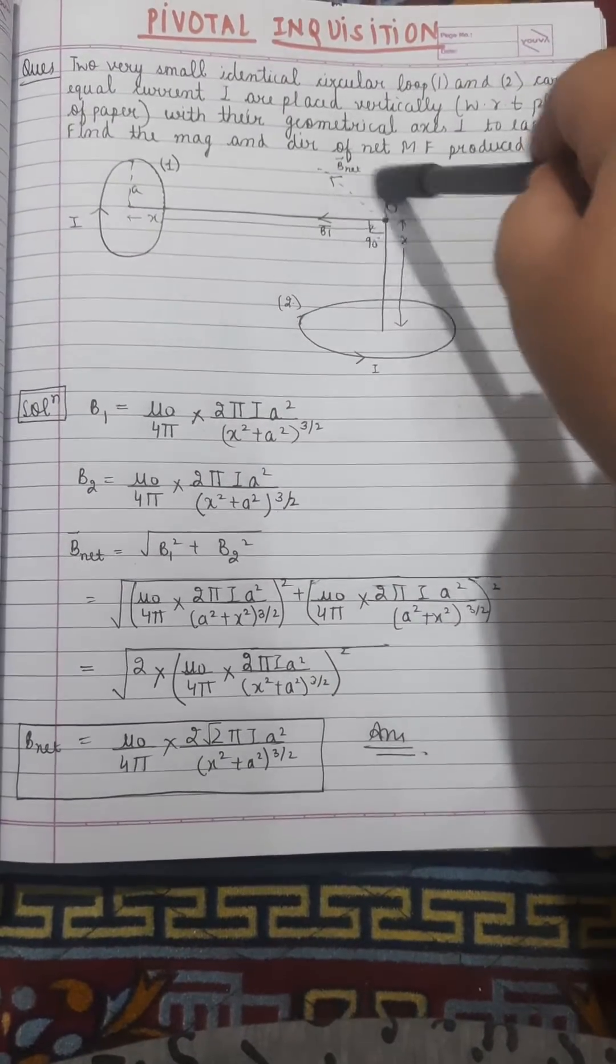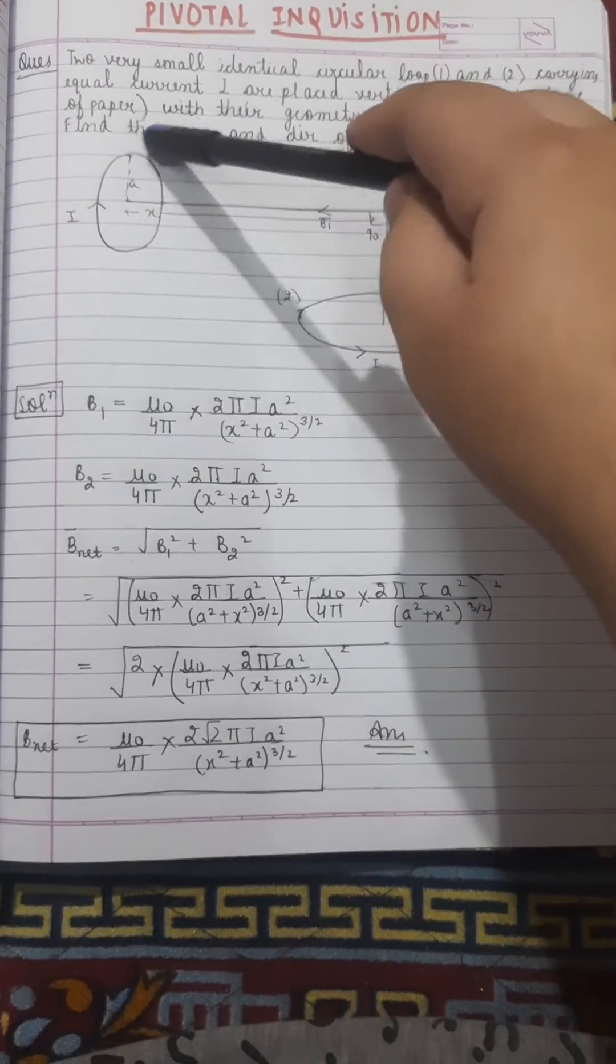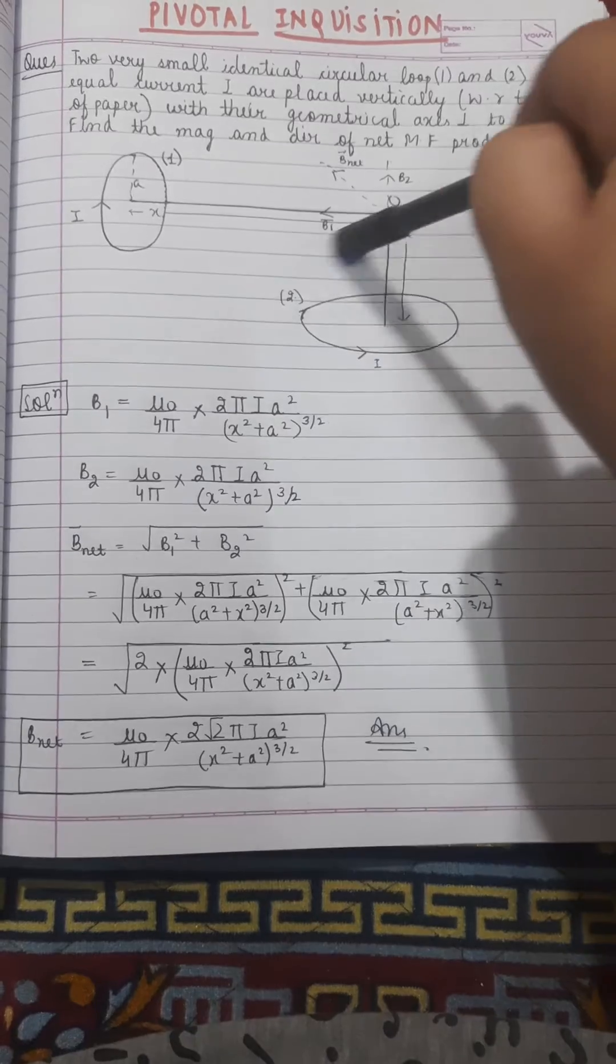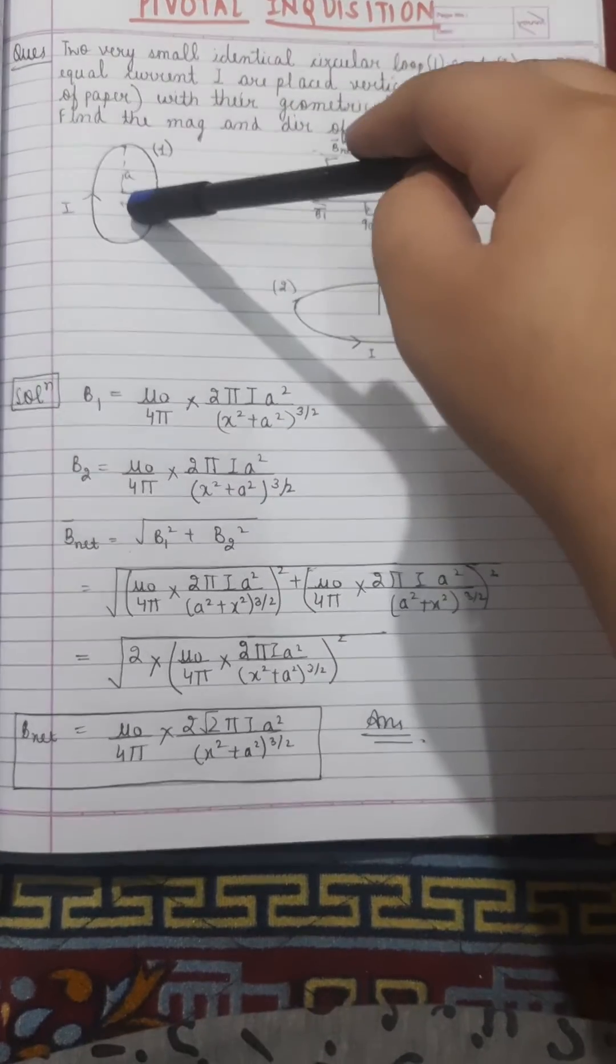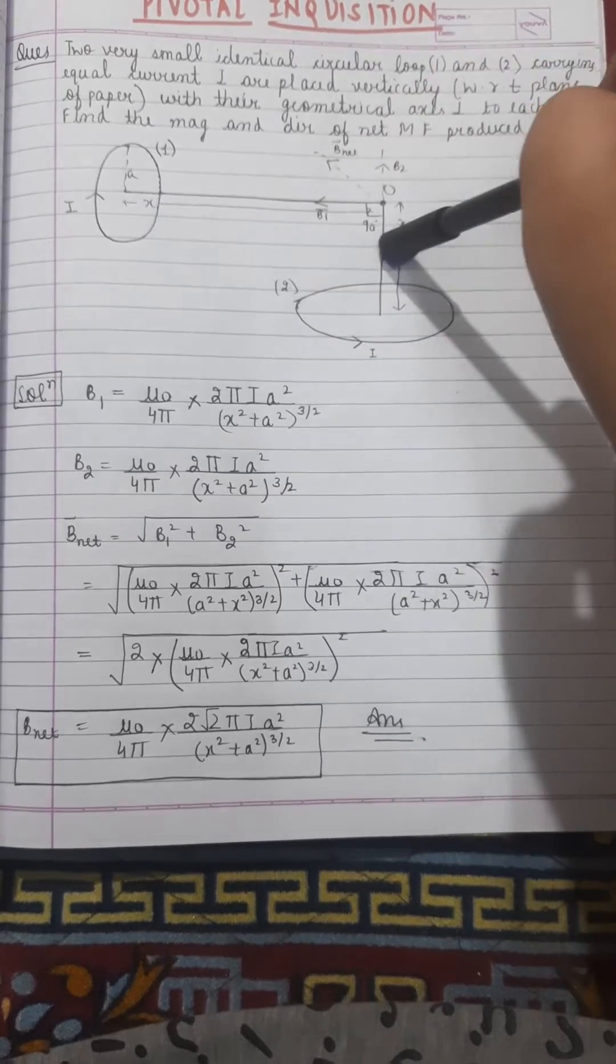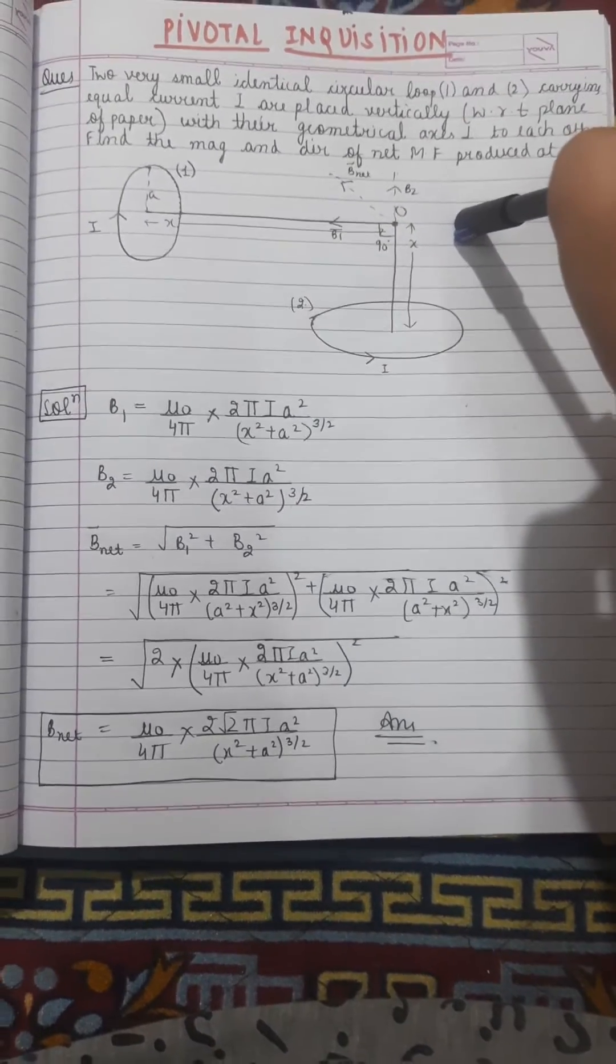This figure is already given in the question with point O marked. Loop one and loop two are circular loops where equal current i flows through both, having radius r, and x is the distance from center of the loop to position O.